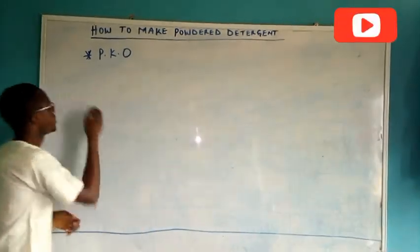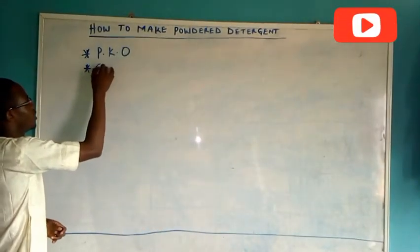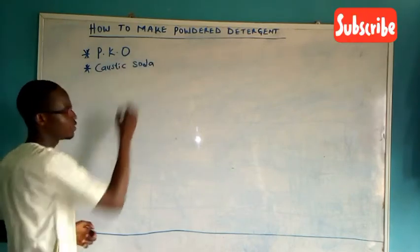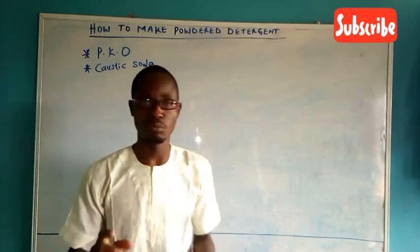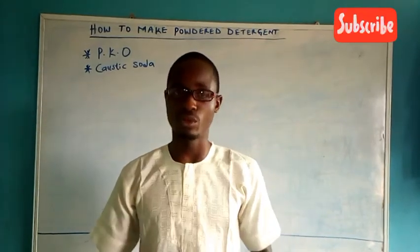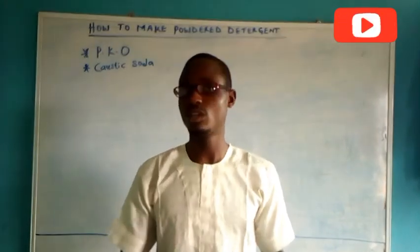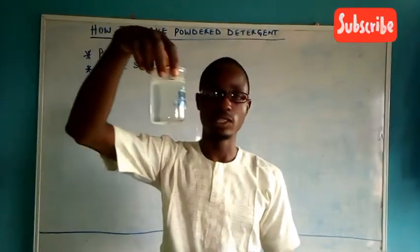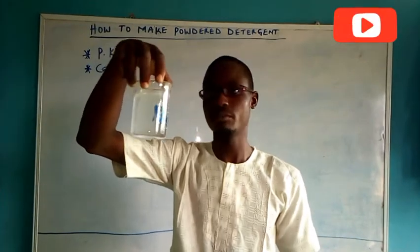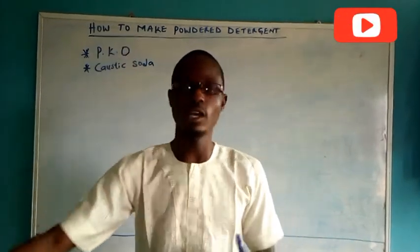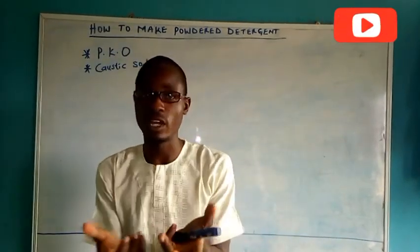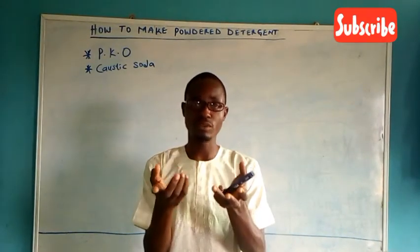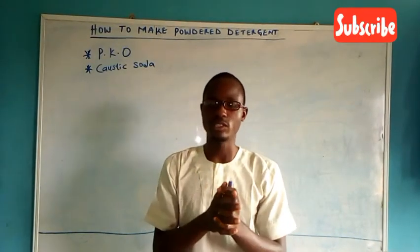Then we also have caustic soda, also known as sodium hydroxide. It's unfortunate that I don't have the raw caustic soda with me, but I already prepared it because if you have to use it, you have to ferment it over 24 hours. So I have done that, and it is in this container here. If you want to identify it physically, it looks like sugar — it is in granulated form.